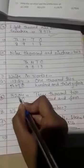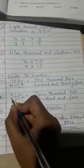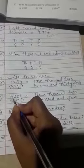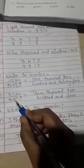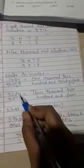3204. Place of 4 is ones, 0 is tens, 2 is hundreds, 3 is thousands. Three thousand two hundred and four.